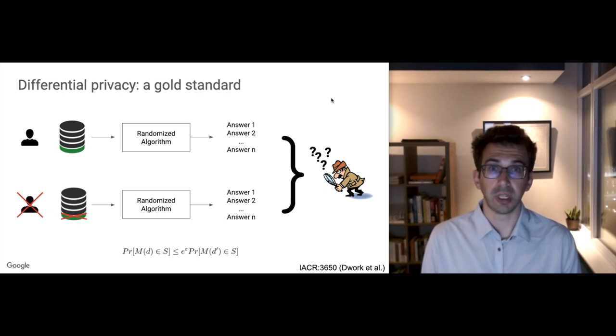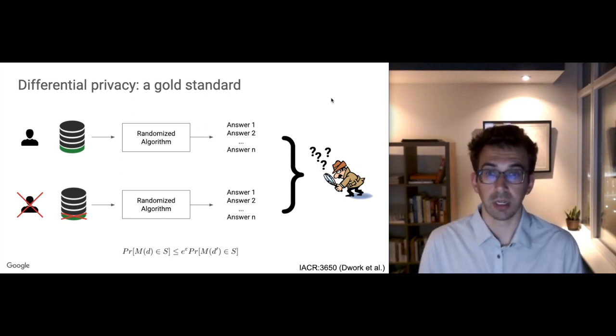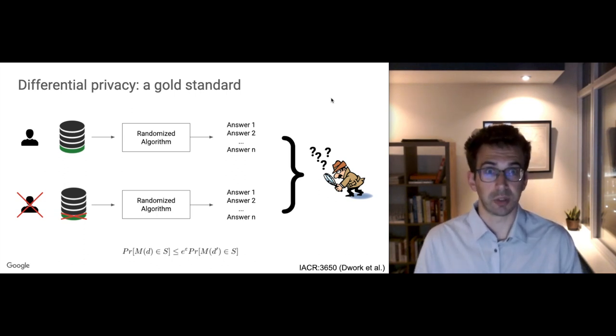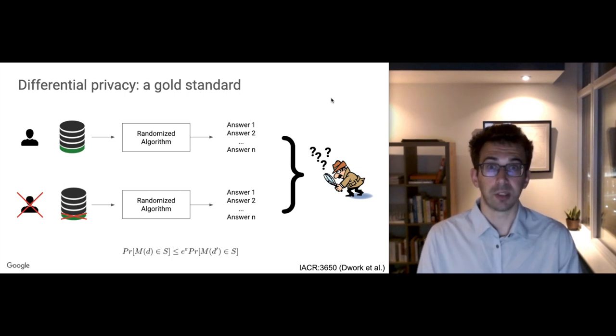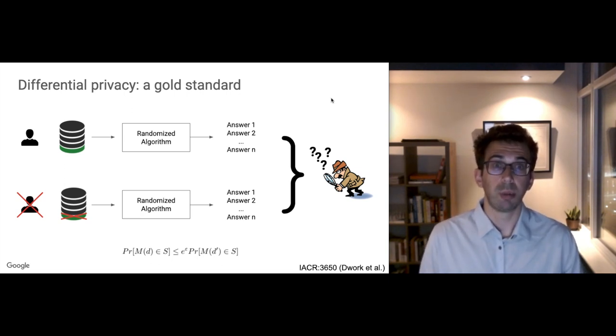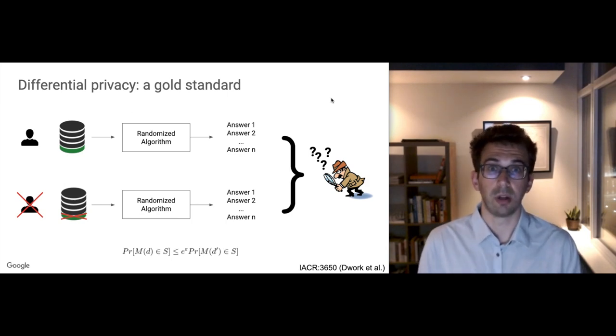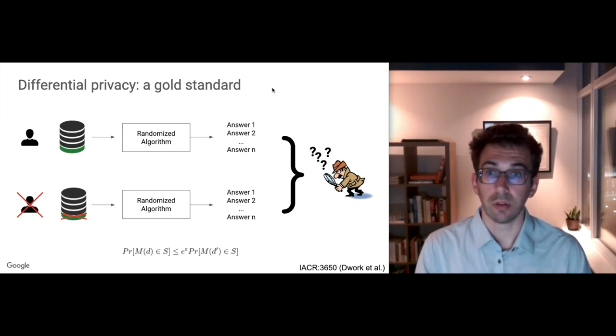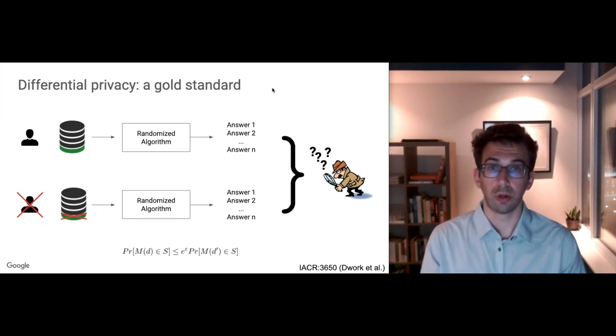What this means more formally is that we want the probability that the training algorithm M outputting a solution S on the dataset D, which would be the top dataset—this probability has to be very close to the probability that the same training algorithm, this time taking as its input the second dataset D prime, outputting the same output S. And so these probabilities are going to be very close within an interval that is bounded by a parameter known as epsilon. If we can prove that this inequality holds for any pair of datasets D and D prime that differ by one record only, then we have differential privacy. And the smaller the value of epsilon we can prove, the stronger this privacy guarantee will be.